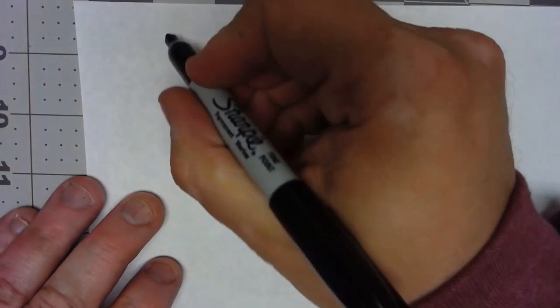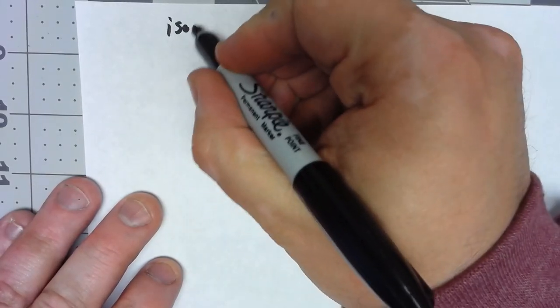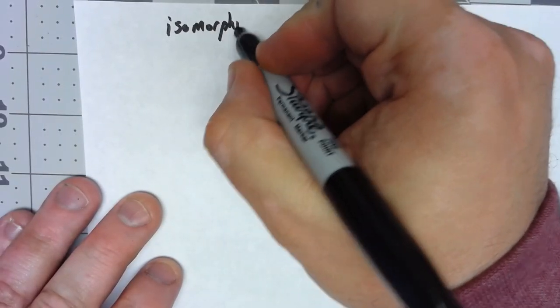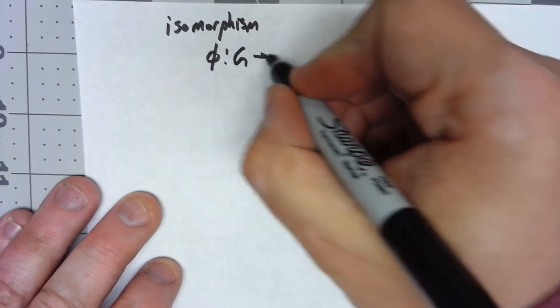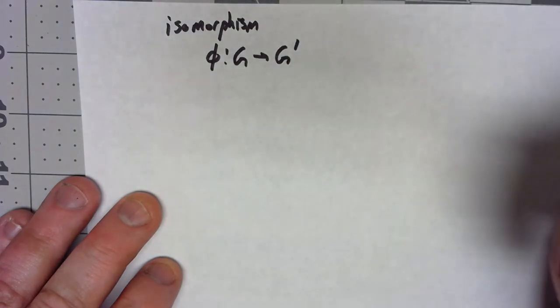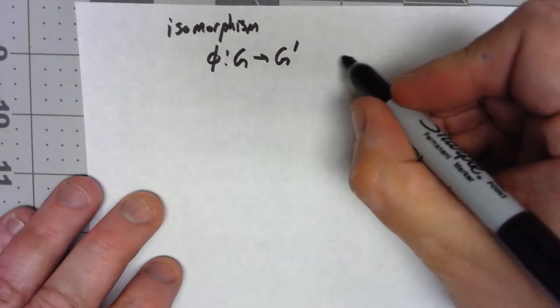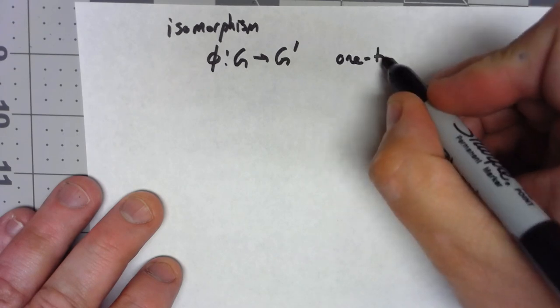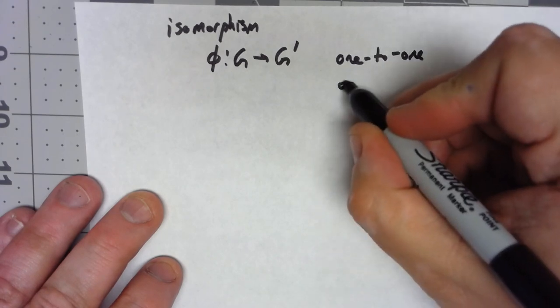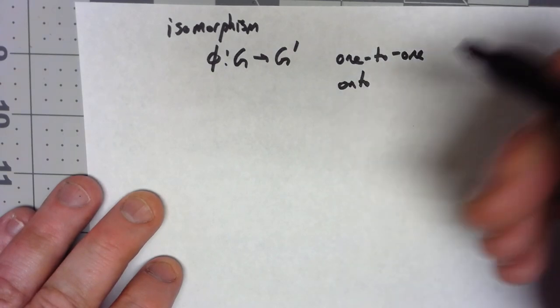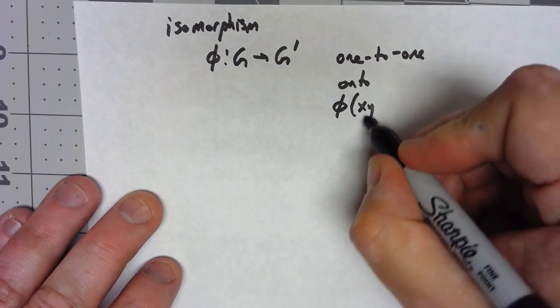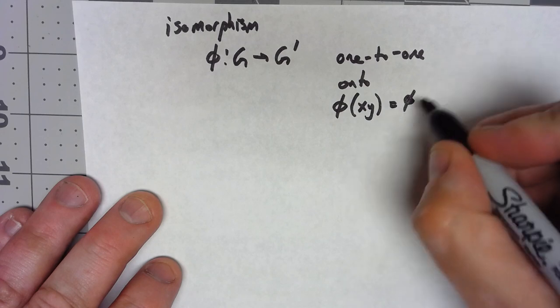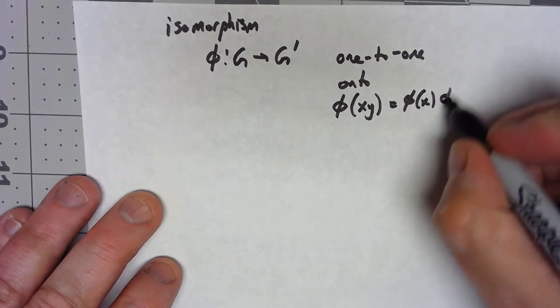Let's remember that an isomorphism is a function from a group to another group such that it's one-to-one, onto, and then has this additional property that phi of xy is equal to phi of x phi of y.